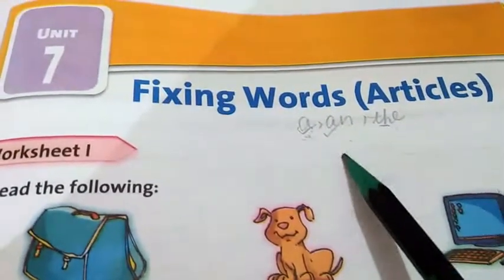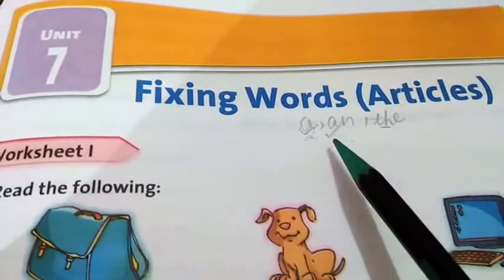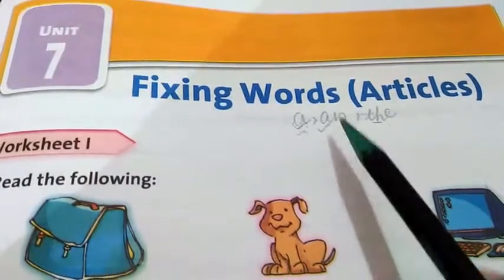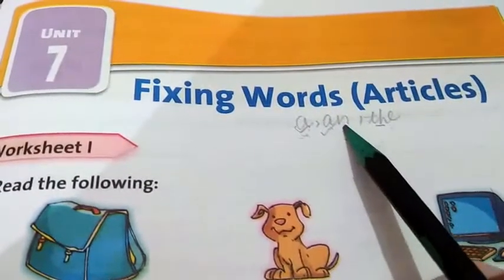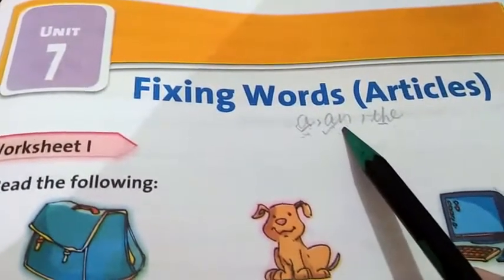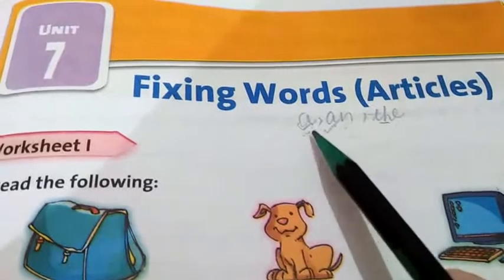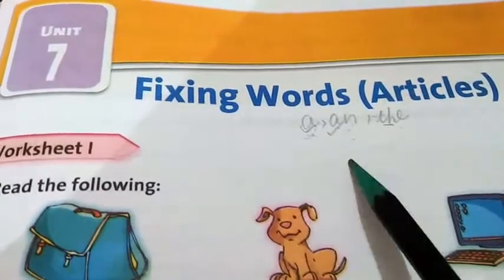If the word starts with A, E, I, O, or U, we will use AN. And if the word starts with any letter except these, we will use A.